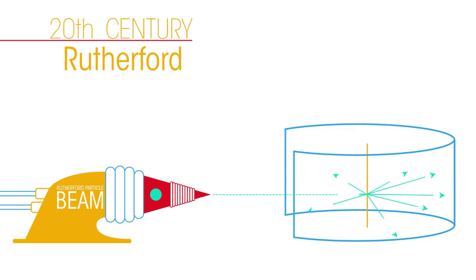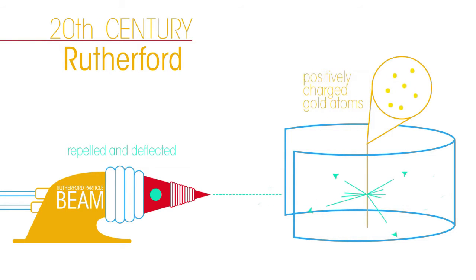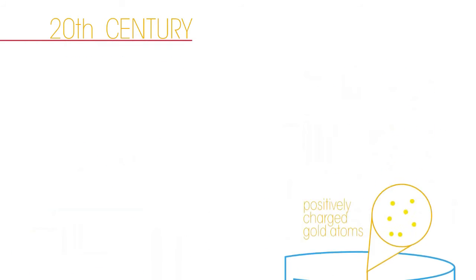They concluded that the alpha particles were being repelled and deflected by tiny new concentrations of positively charged subatomic particles within the gold atoms, which made up the gold foil.